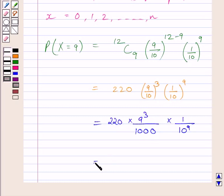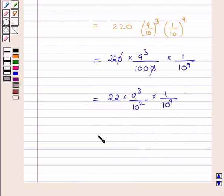After cancellation, we get 22 multiplied by 9 cubed upon 100 multiplied by 1 upon 10 raised to the power 9. Using the laws of exponents, we get 22 multiplied by 9 cubed upon 10 raised to the power 11, since the bases are the same, so powers get added.